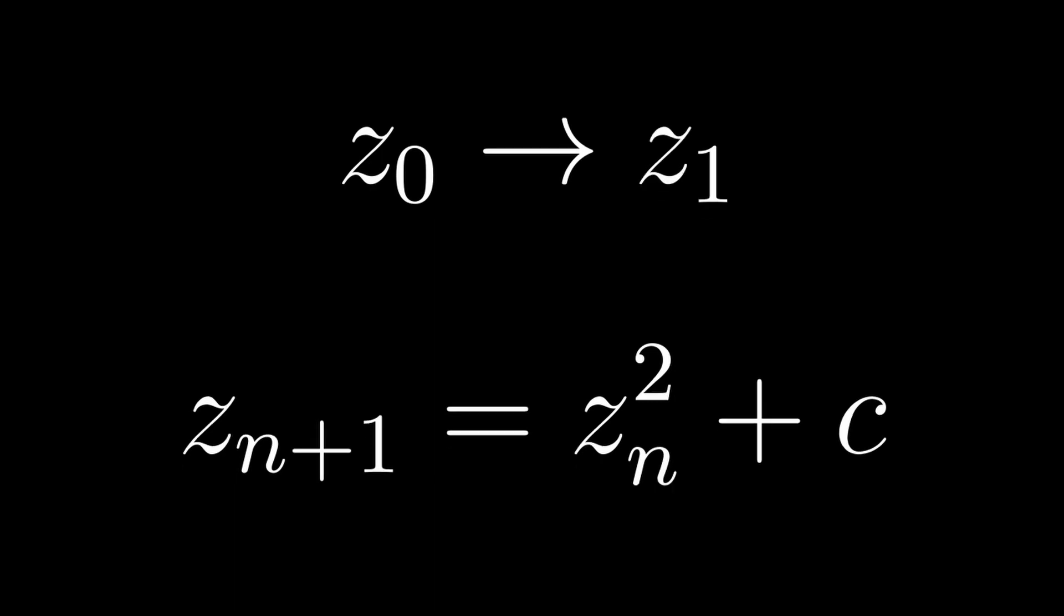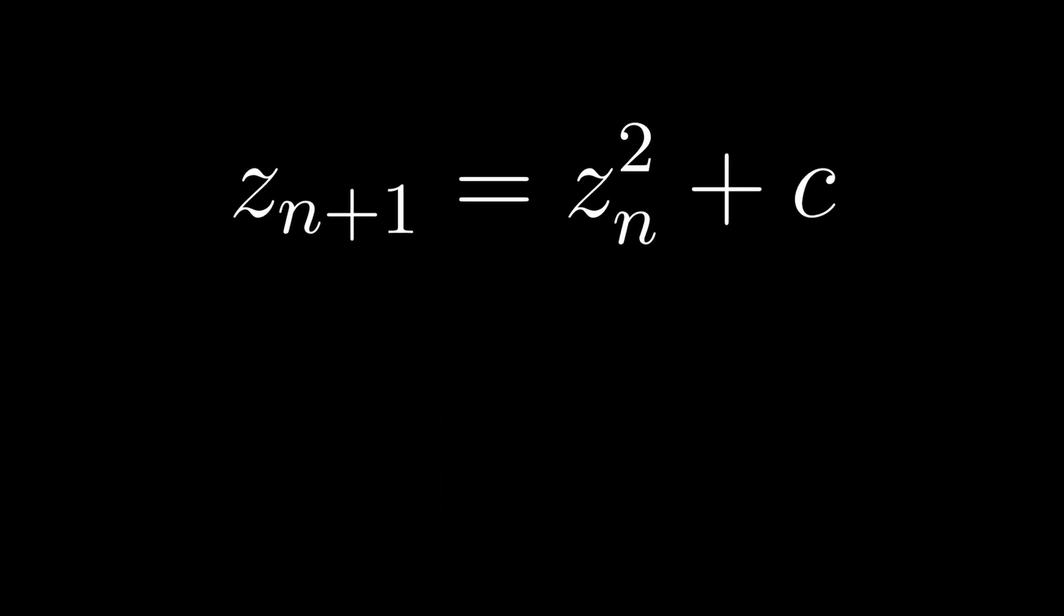Let us begin by quickly going over the basics just so that we are all on the same page. How do we create the Mandelbrot fractal? We start with the formula z sub n plus 1 equals z sub n squared plus c, which means that based on an initial value z sub 0, a subsequent value z sub 1 gets calculated by plopping in z sub 0 into the equation, squaring it and adding a constant factor.